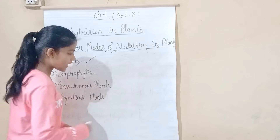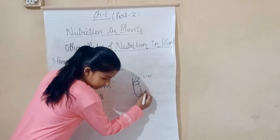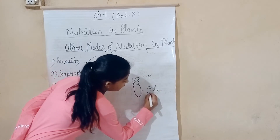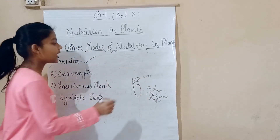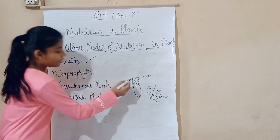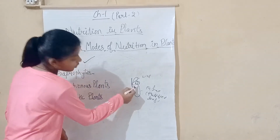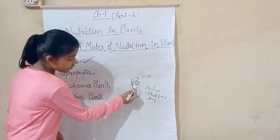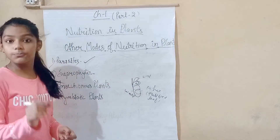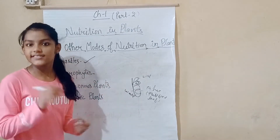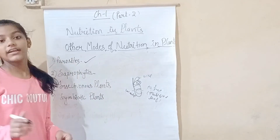Here is a picture of the insectivorous plant showing its modified leaf structure. The outer skin and wall area can be seen. Insectivorous plants grow in nitrogen-deficient soil and obtain nitrogen compounds by trapping and digesting insects.